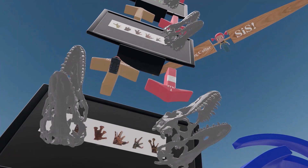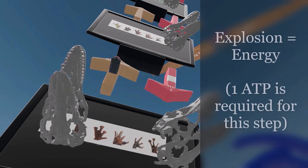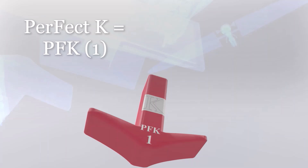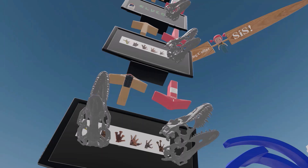When the screen descended further, a second fossil face appeared on position one, giving us 'frog toes with the one-six fossil face' for fructose-1,6-bisphosphate. The explosion again reminds us that one ATP is required for this step. The arrow leading to this screen has a 'perfect K' on it — perfect K for PFK1. PFK1 is the enzyme that converts fructose-6-phosphate to fructose-1,6-bisphosphate, and this is the rate-limiting step of glycolysis.